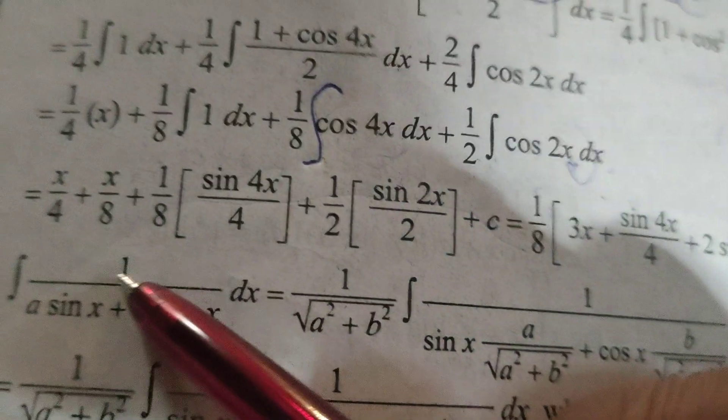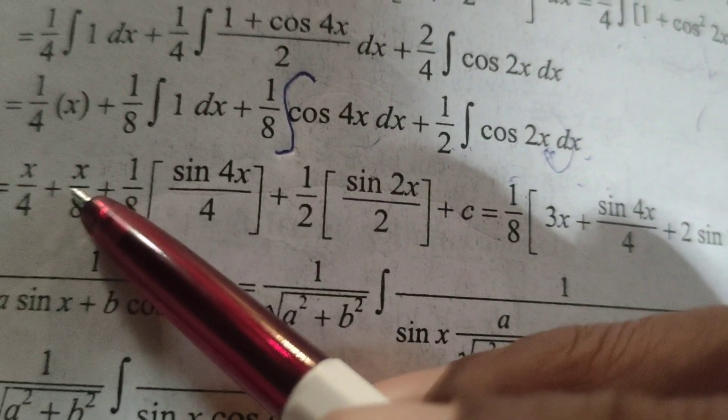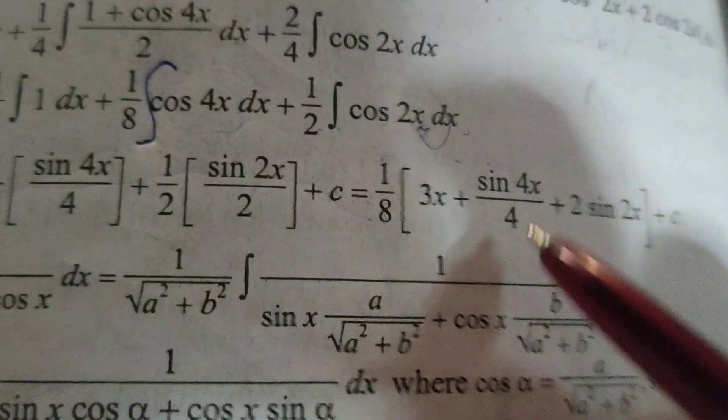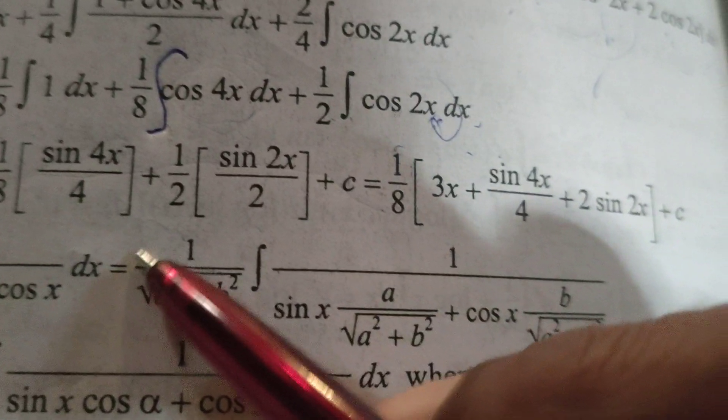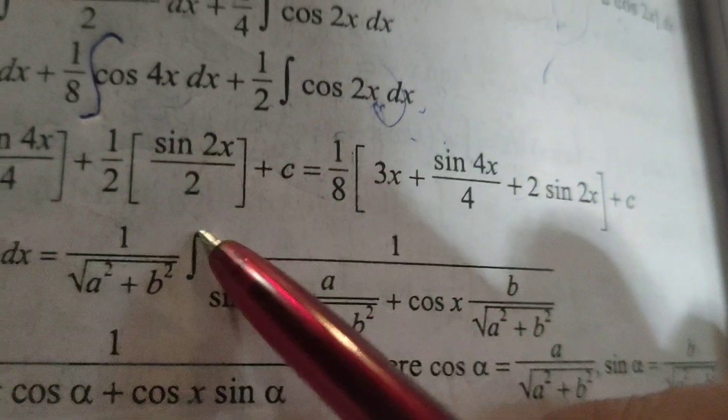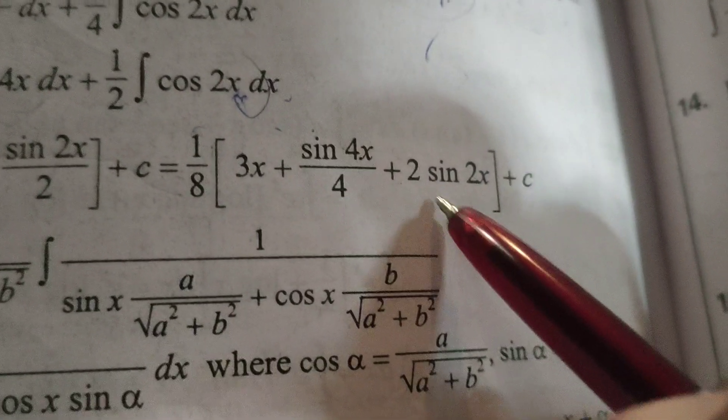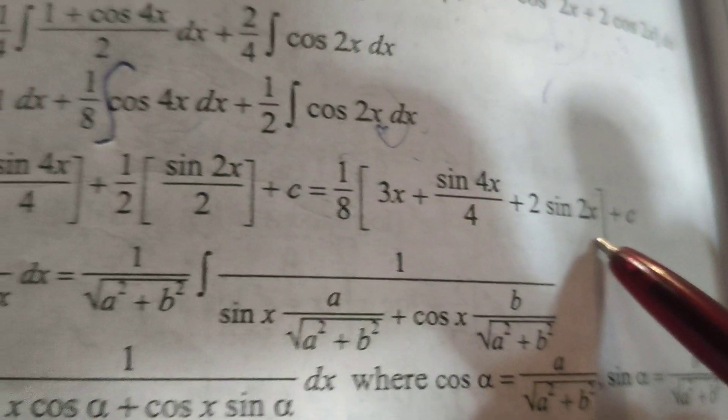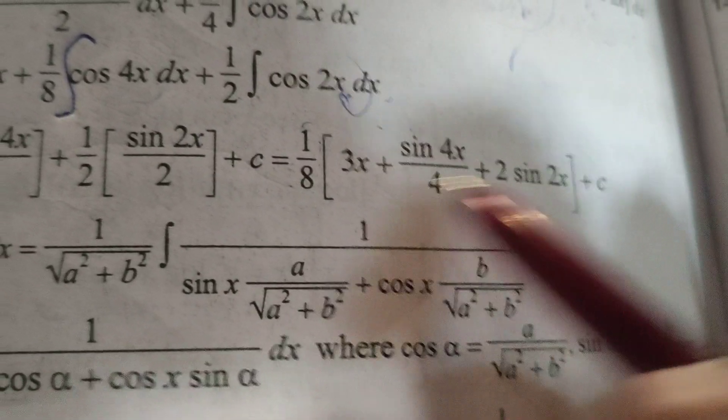1 by 8 is a common factor. So 1 by 8 into here 3x and here write sin 4x by 4. And here write 2, multiplying 2. Why? Because here 4 denominator only. So 2, 4's are 8, we will get 4 here.